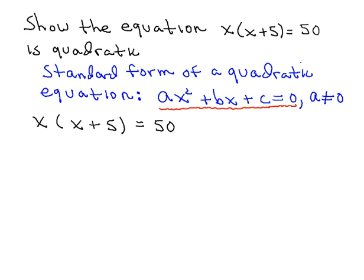So what we'll do is multiply out on the left-hand side. So we'll have x squared plus 5x is equal to 50.